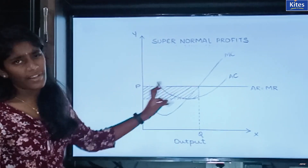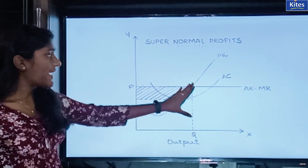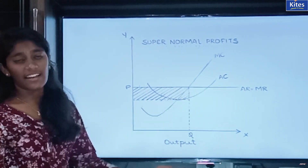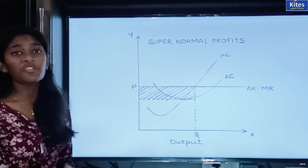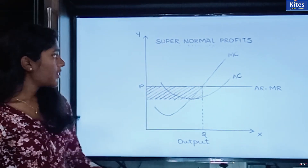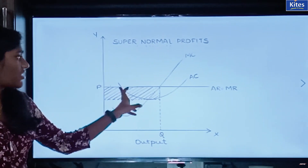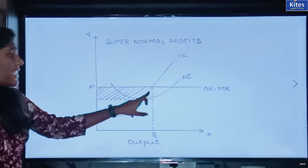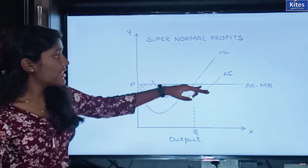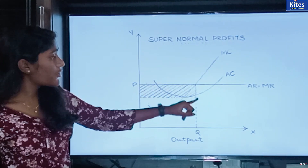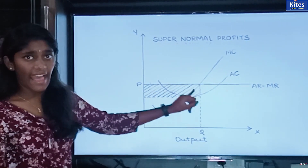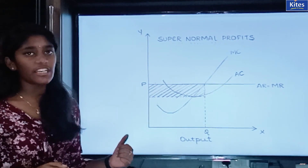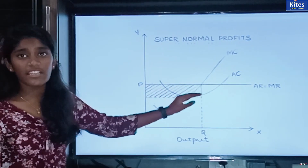The price at the equilibrium point is the equilibrium price and the output is the equilibrium output. At the equilibrium point you have to check whether the firm is running in normal profits, super normal profits, or losses. For that you have to compare your average cost curve and your average revenue curve. At the equilibrium point, your average revenue is higher and average cost is lower. That means whatever you are getting — revenue — is more than what you are spending — cost of production. So that is the condition of super normal profits. The shaded part here represents your super normal profits.